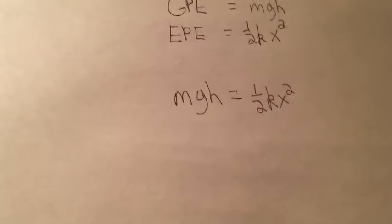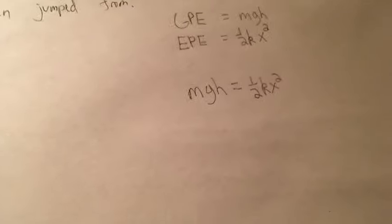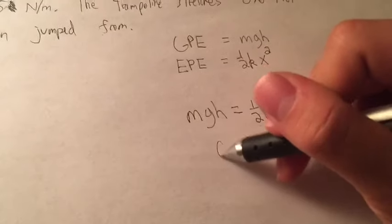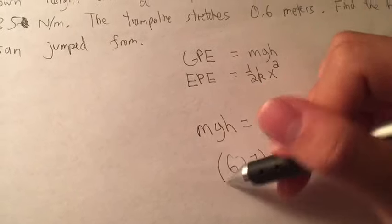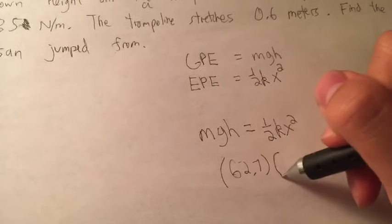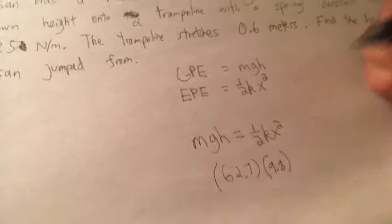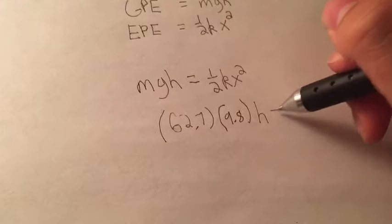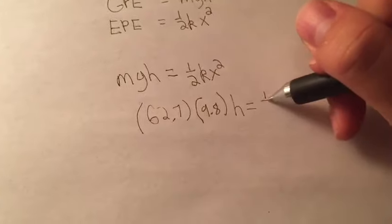And from here, all we have to do is plug in variables. So mass is 62.7, gravity we can say 10 or we can say 9.8, and then the height, well, we do not know that. So that equals one-half.